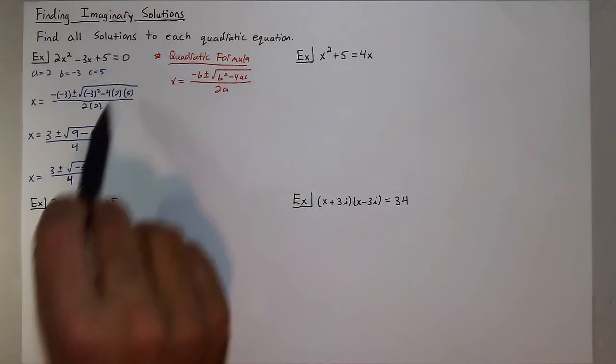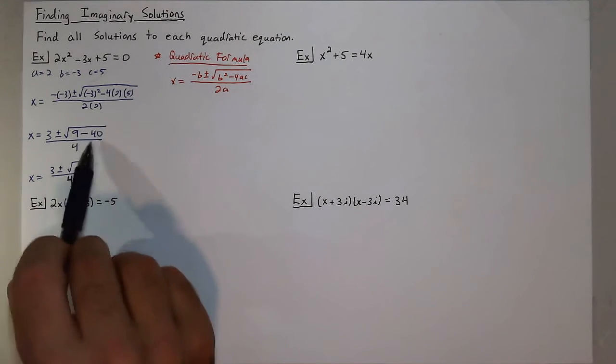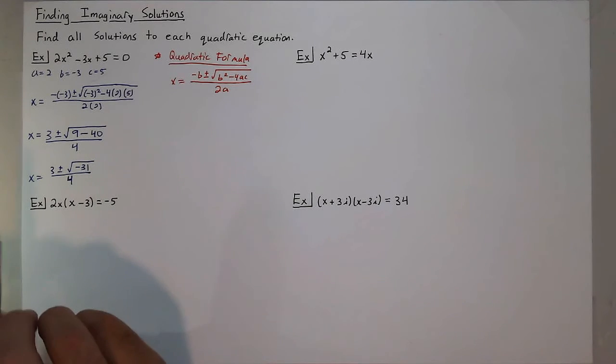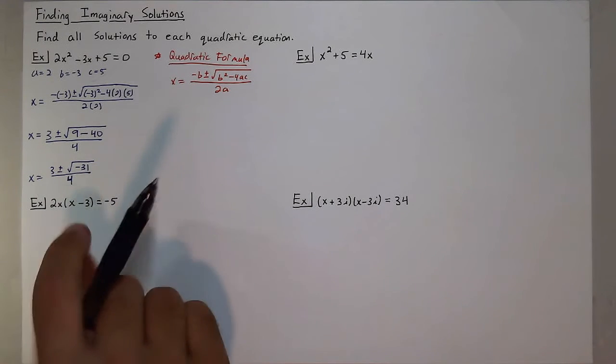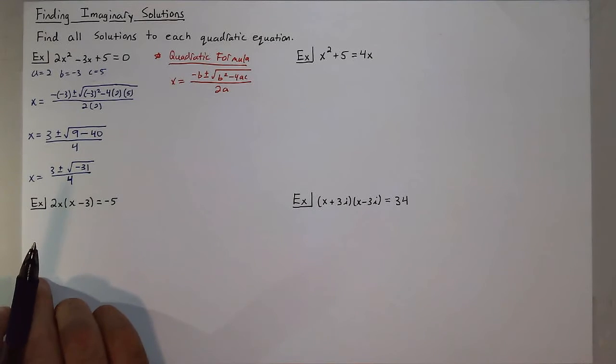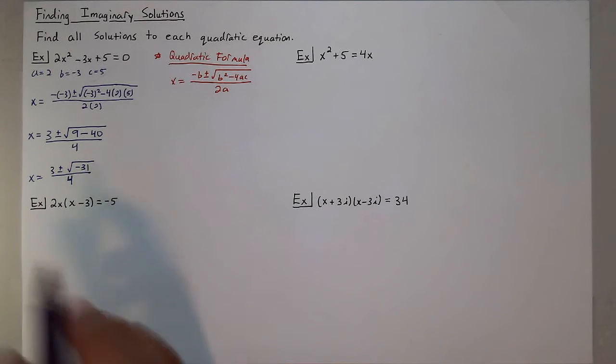Now we learned before that the number underneath the radical is called the discriminant, and whenever it was negative we had no real solutions. The reason why is because now this is going to be a complex solution with two imaginary numbers.